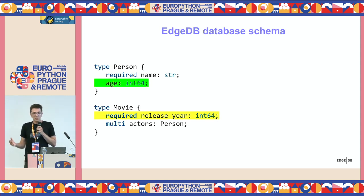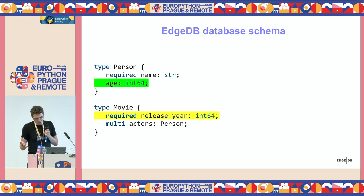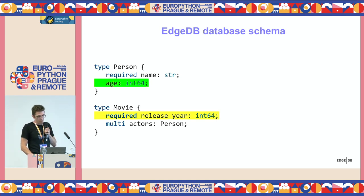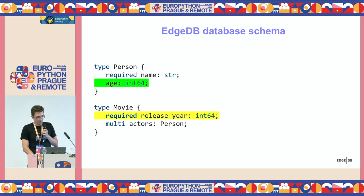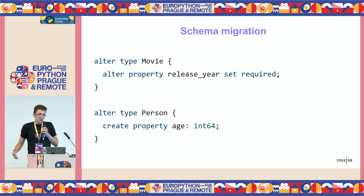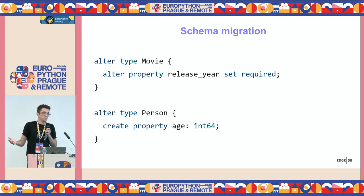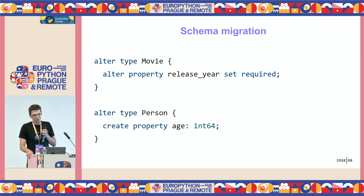At some point later, the developer working on this application decided to modify the schema by adding the age property to the Person type, and also modified the Movie type by making a property required. This is something that people normally do on a regular basis when working on their application. For this change, EdgeDB would generate a migration — similar to what Django ORM would help you generate.